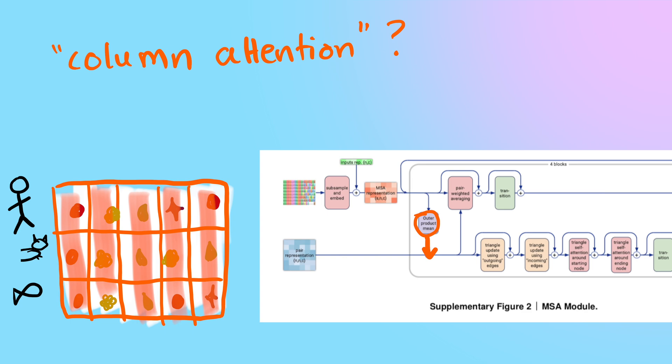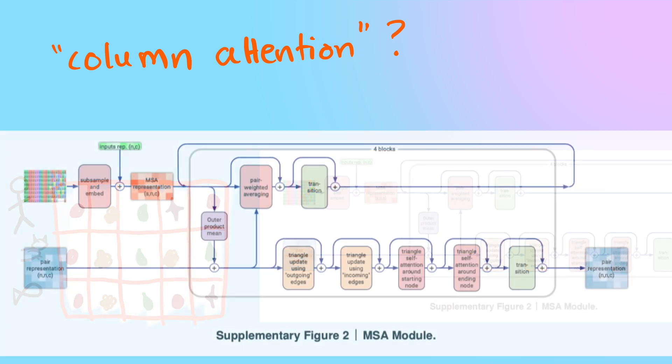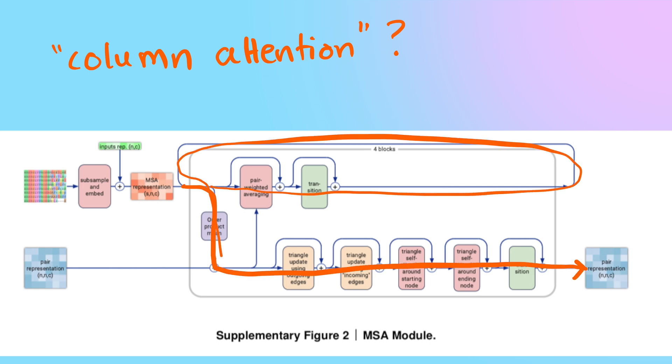Instead, there's this kind of like averaging down the columns that then gets put into the pair representation. It never gets directly updated in the MSA itself. So you can see that they've basically tried to make a bottleneck where all the information, if it's useful, has to end up in the pair representation. I think it's interesting that you still need the MSA at all, especially because certain types of molecules don't have an MSA. Like ligands, they're just molecules. Like there's no evolutionary history for them.